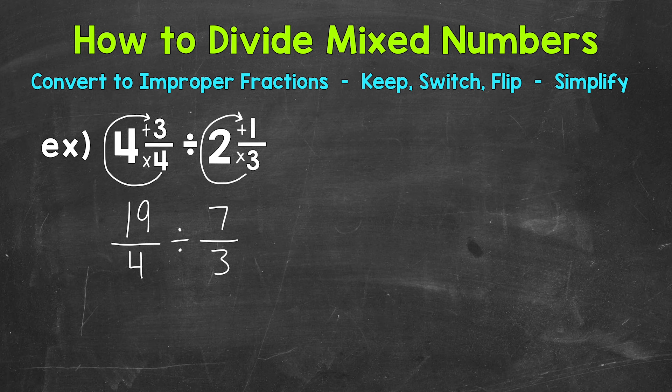19 fourths is equivalent to 4 and 3 fourths, and 7 thirds is equivalent to 2 and 1 third. So we're not changing the value of the problem at all when we convert to improper fractions. Mixed numbers and improper fractions are equivalent. They're just in different forms.